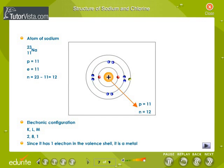Structure of sodium and chlorine. As shown in the slide, sodium whose atomic number is 11 has 1 electron in its valence shell. It tries to lose this valence electron and tries to attain the octet state, which is stable. Therefore, sodium behaves as a metal.